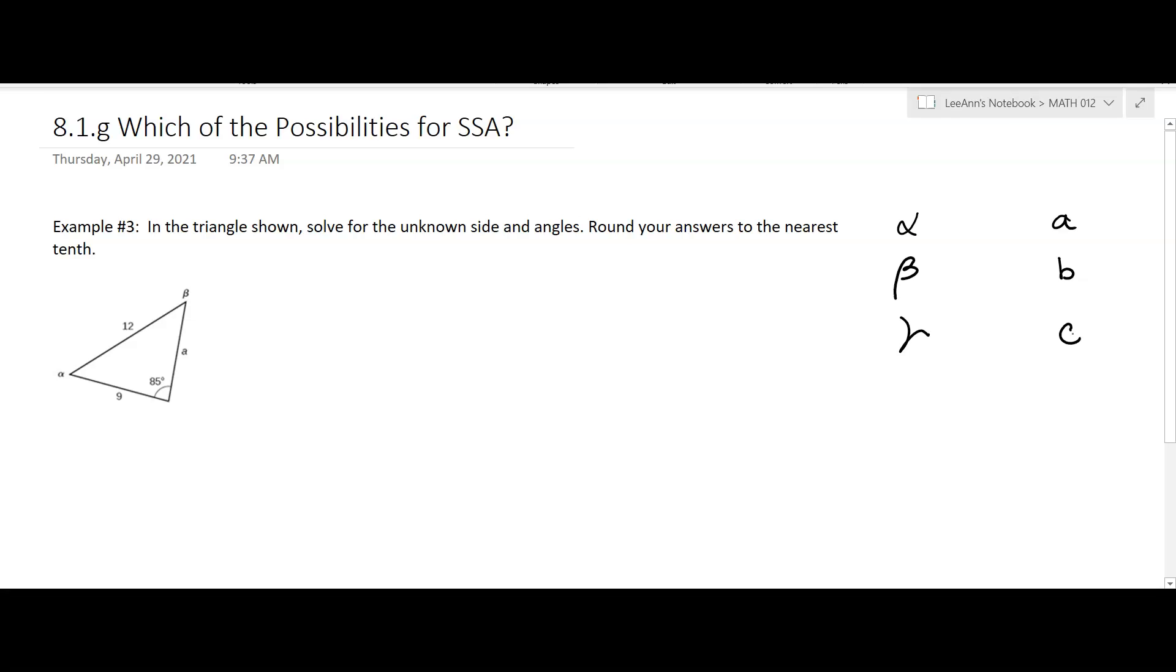Angles alpha, beta, gamma, sides a, b, c. And we don't know a, but we know this is b over here, this is gamma, and this is c over there. So we know c is 12, and we know b is 9. And we know gamma is 85 degrees.